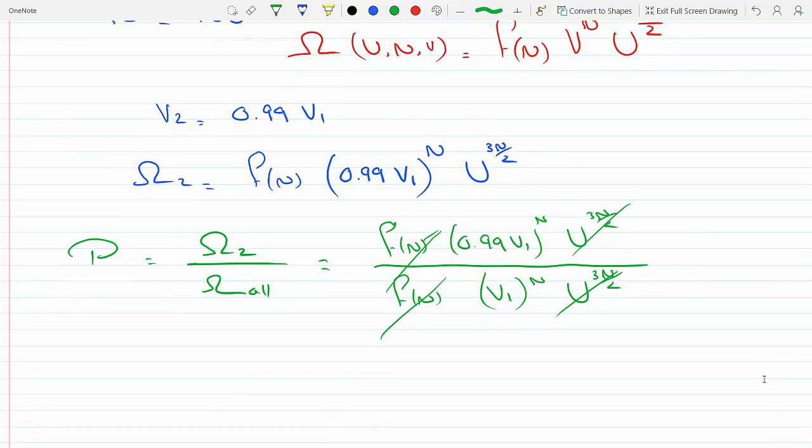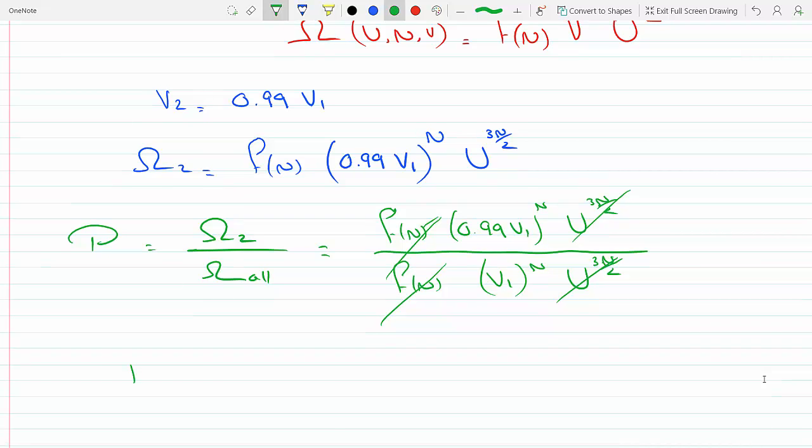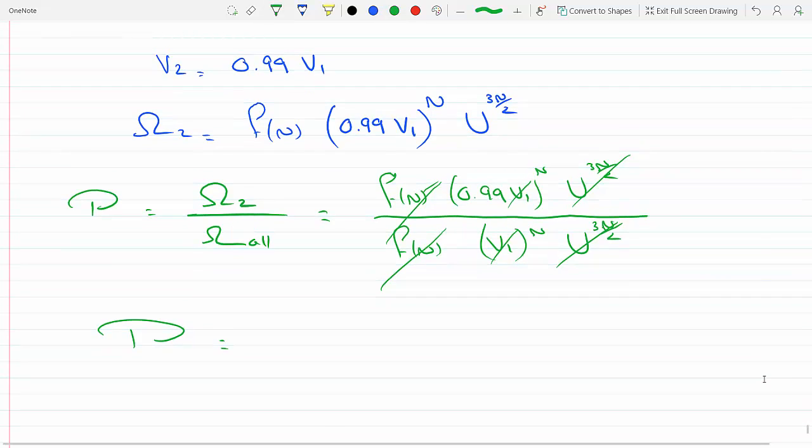And so we get probability is equal to - you can see I could cancel this V1, put them under the same power, so this would be 0.99 to the N.